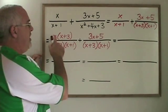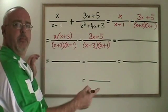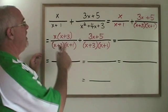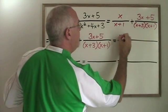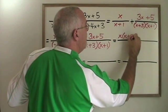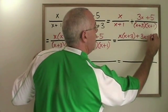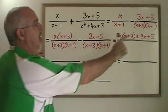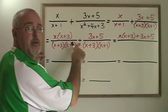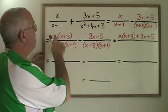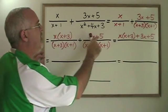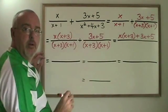The next step is to combine both numerators over the common denominator in a single fraction. The plus in the middle comes from here. This can be read as x times x plus three plus three x plus five over the common denominator.